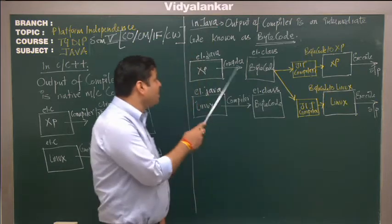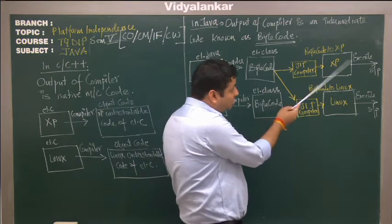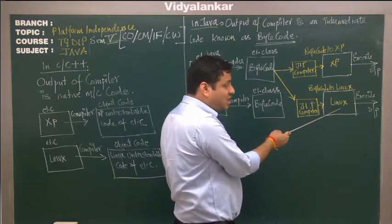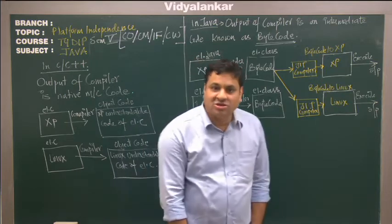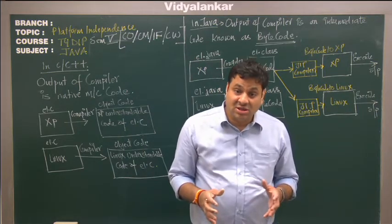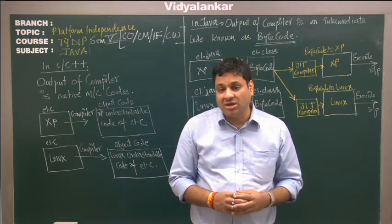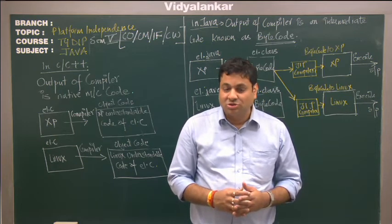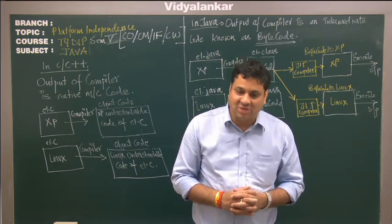So what we have seen here is a Java program compiled on XP can be executed on XP, it can be executed on Linux, and any other operating system where the Java support exists. So what we see here is this is the reason Java is the programming language that is used for creating web-based applications. So this is about platform independence. I hope you must have enjoyed the session, thank you.